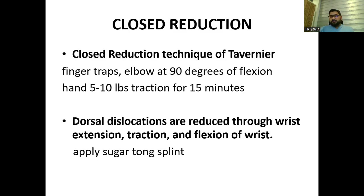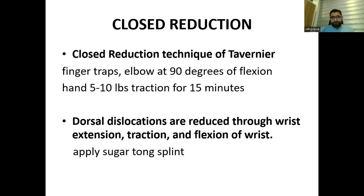There are several closed reduction techniques described in textbooks. The Tavernier technique uses finger traps with the elbow at 90 degrees of flexion and 5 to 10 pounds of traction for 15 minutes. Dorsal dislocations are reduced through wrist extension, traction, and flexion of the wrist. After reduction, a sugar-tong splint is applied.